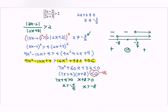Write the answer: negative 8 until negative 3 over 2, union, then from negative 3 over 2 until negative 4 over 7. Do remember: negative 8, negative 3 over 2, and negative 4 over 7 are all not included.